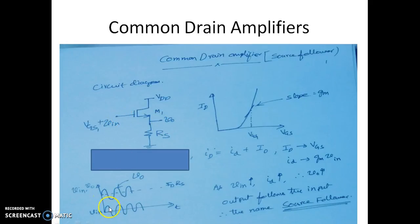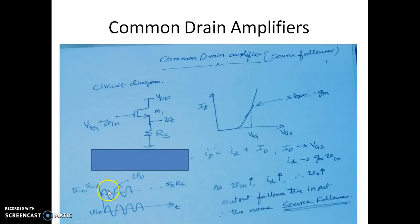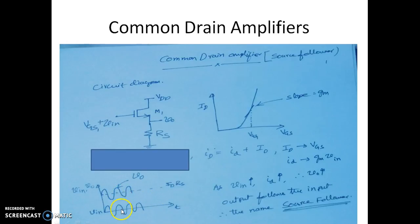The input signal is a sine wave with respect to zero. The output will be a DC-shifted version of it, and you can see it is exactly in phase with the input signal. This is VOUT, which is in phase with the input signal, but DC-shifted by a value of ID times RS.